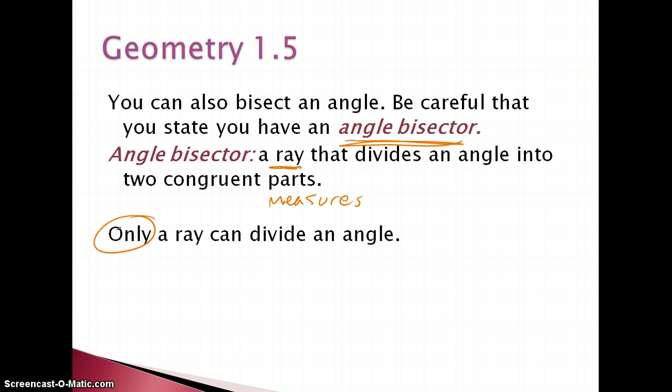Only a ray can divide an angle. Keep in mind that we can have a line that goes through an angle, but so long as we can label it—even though line ED is going through our angle, we can still say and we will say that our angle bisector is going to be this ray BD. So it's just important kind of as a distinction.